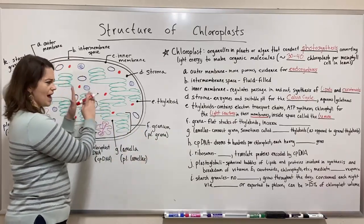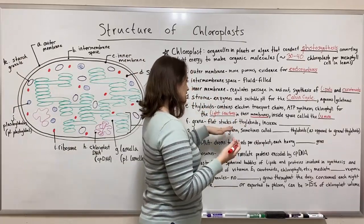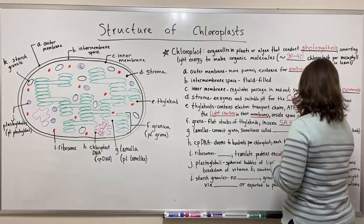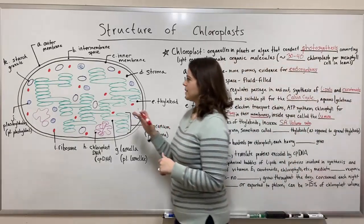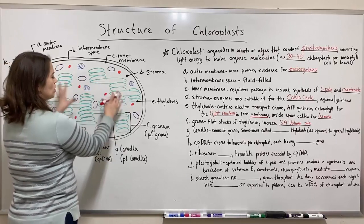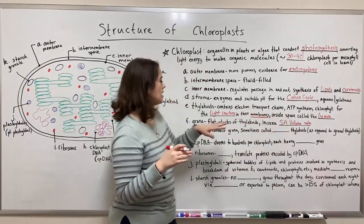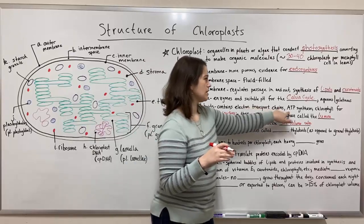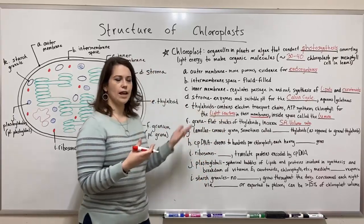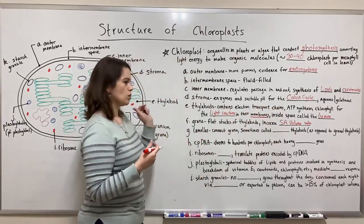Each chloroplast has multiple grana that are stacks of thylakoids. Why do these things exist? They are here to increase the surface area to volume ratio. The thylakoids get organized into these grana, and each thylakoid has all of these different membranes, which really increases the surface area to volume ratio. Because it's in these membranes that you have all of the important components embedded — the more membrane you have, the more efficient and effective the light reactions are. I also have a video on surface area to volume ratio that goes into a lot more detail.